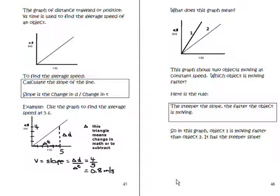Okay, so what we need to learn is that the graphs actually do mean something. Here's the graph of distance traveled or position versus time. What you can do with that graph is use it to find the average speed of an object. When you look at the graph, the slope of your line is your average speed.